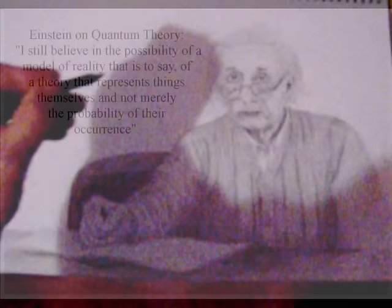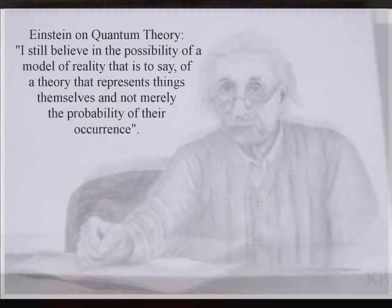In this theory, we have free will because we have a process of continuous energy exchange, or continuous creation, formed by the spontaneous absorption and emission of light with the flow of positive and negative charge.